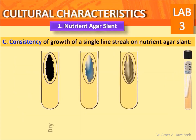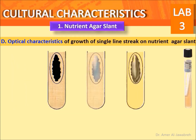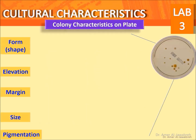Consistency of growth on a nutrient agar slant is classified as dry, buttery, or mucoid. Some bacteria are chromogenic, coloring the medium green, red, or yellow. Optical characteristics of growth are described as: opaque (no light transmission), translucent (partial light transmission), or transparent (full light transmission).